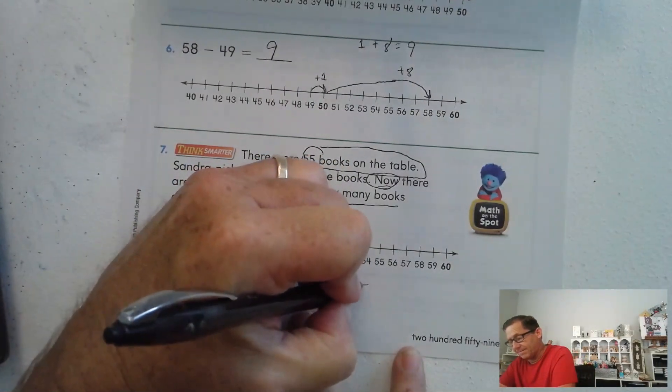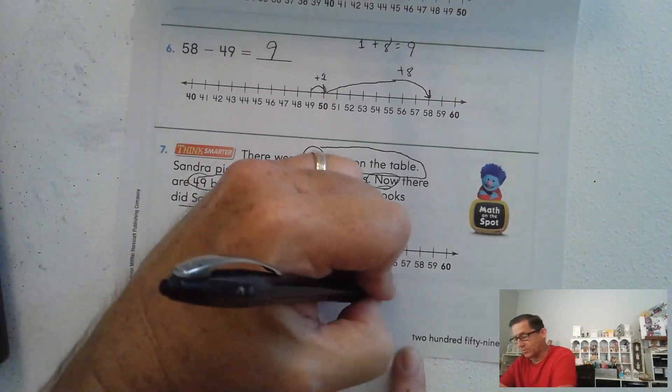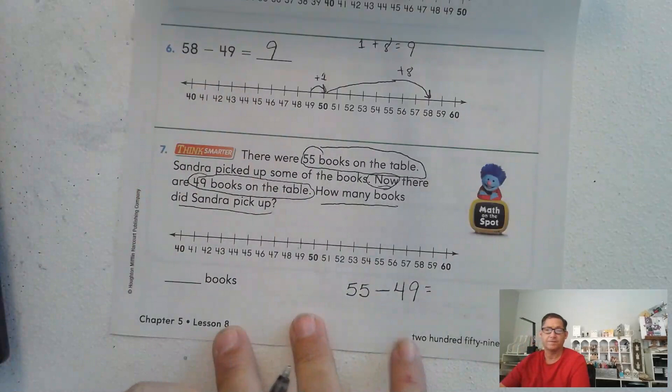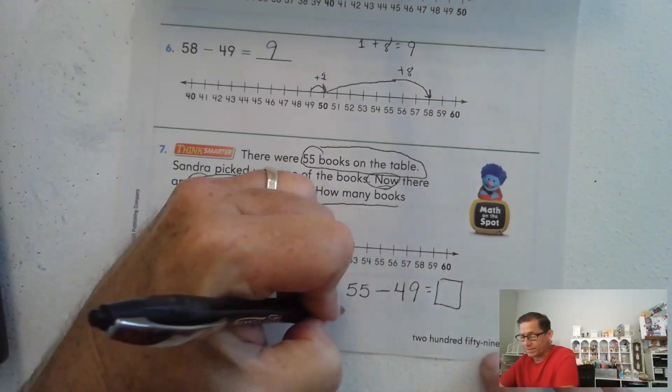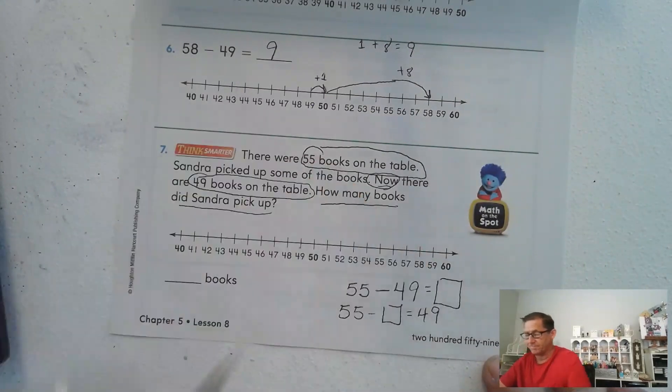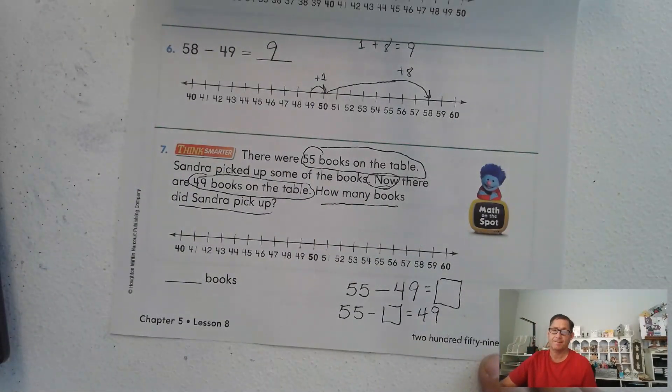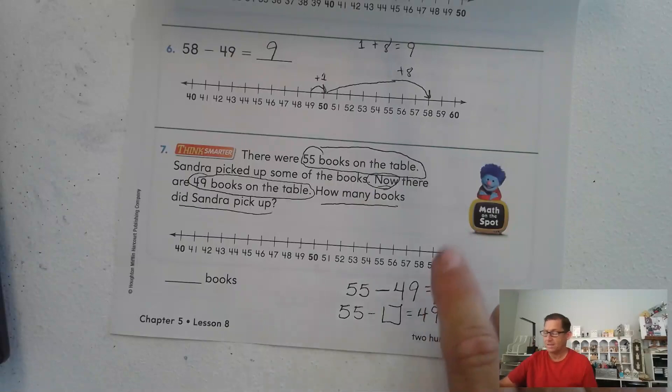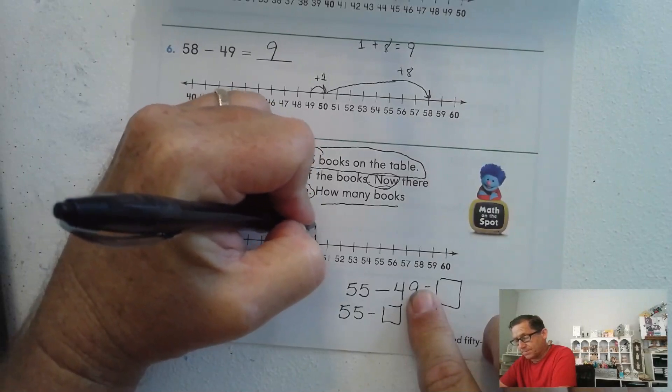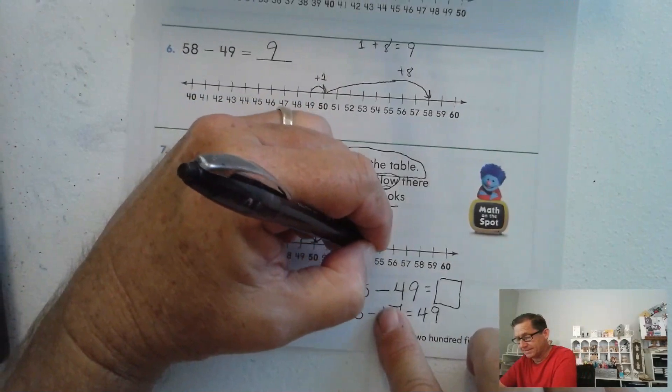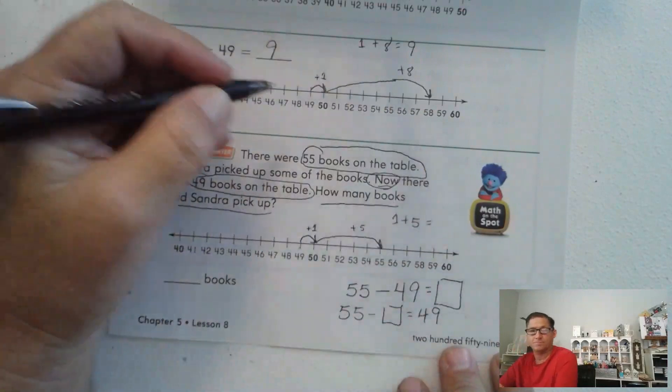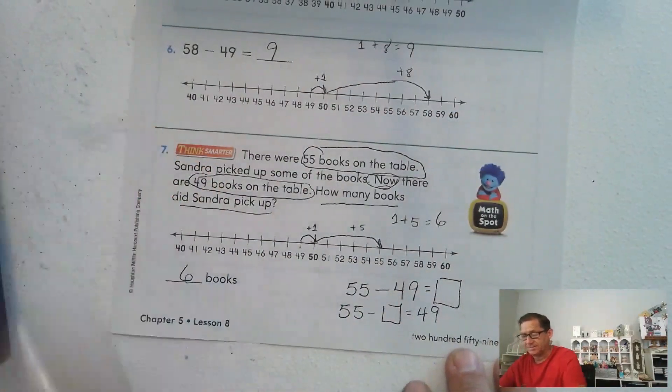So we have 55. And we have to take away - if we take away 49, that'll tell us how many she picked up. We could also say 55 minus the number of books she picked up equals 49. So I'm going to start to use this one: 49 plus 1 gets me to 50, and then I have to jump 5 to get to 55. So we jumped 5 and 1. 1 and 5 is 6. So she picked up 6 books.